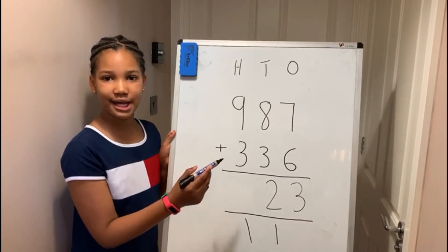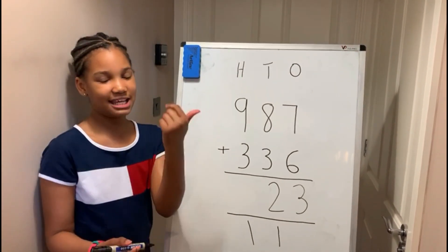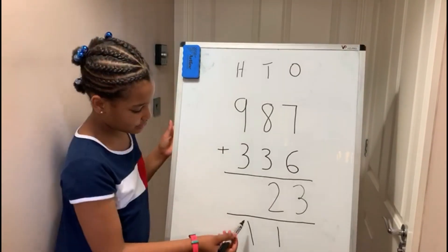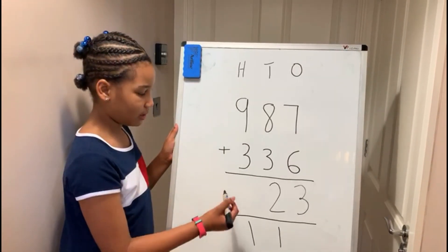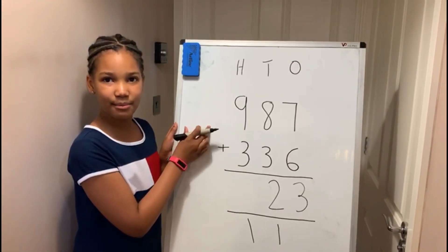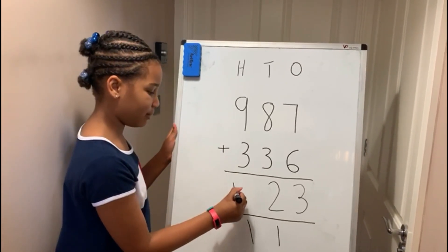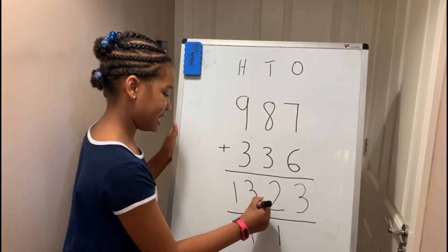Now you do nine add three: nine, ten, eleven, twelve. And you still need to add the one. Because there's not another set of numbers to add the one to, you just write the whole number, thirteen, in the box.